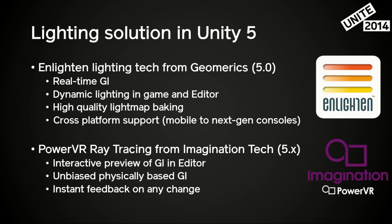In the near future, we will also integrate the PowerVR ray tracing tech. When Enlighten is computing data it needs to do the lighting in real-time, we will be using PowerVR path tracing to show you what the result is going to be in the correct lightmap layout. We're going to do this for the dynamic light maps and for static baking as well. So you will see it progressively getting better. As soon as you move something, something will happen on screen and it will fix up the lighting as quickly as possible. We'll show a demo of this later.